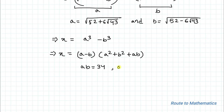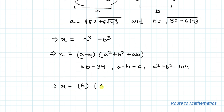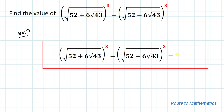We have A minus B equals 6, A squared plus B squared equals 104, and AB equals 34. So A squared plus B squared plus AB equals 104 + 34 = 138. Putting all values together: x equals 6 multiplied with 138, giving x equals 828. So our answer for the given radical is 828. I hope you have understood the solution. Please subscribe to the channel and hit the like button for more such interesting videos.